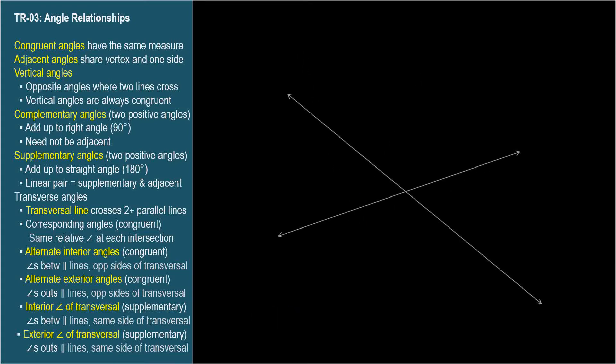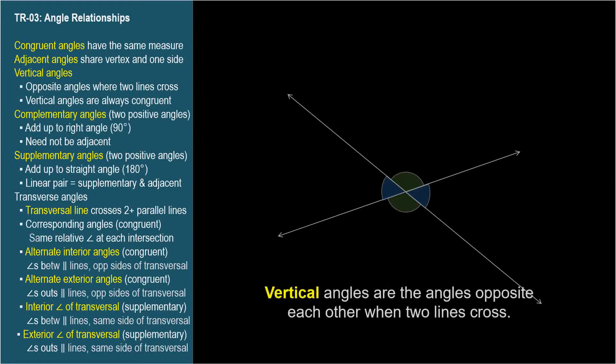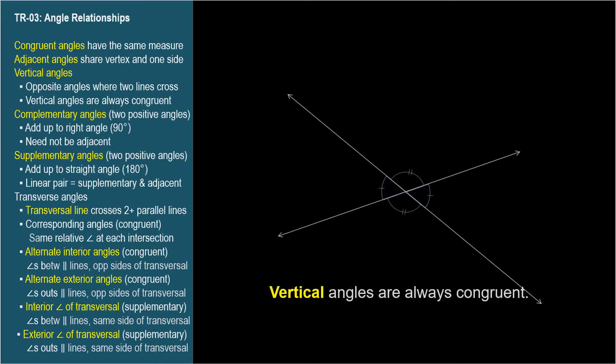When two lines in a plane are not parallel, they cross or intersect at a point. This intersection point is the vertex for four angles as shown. Vertical angles are the pairs of angles opposite each other. So these are vertical angles, and these are vertical angles. Vertical angles are always congruent.